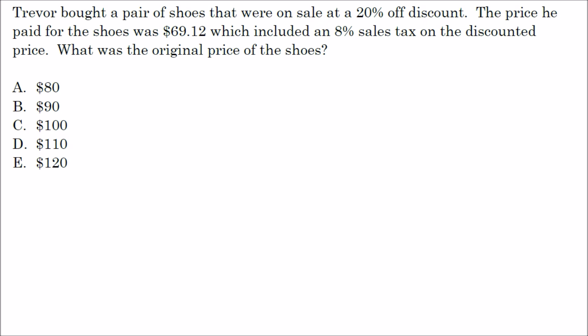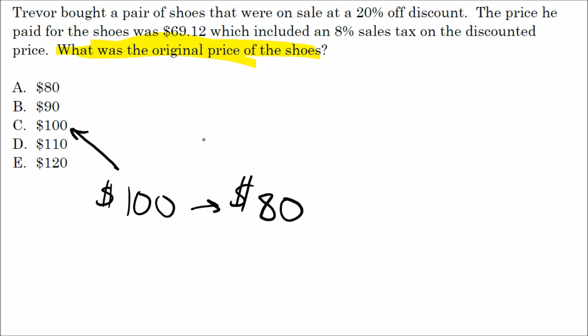A lot of people struggle with percent questions, so let's try to make this as easy as possible. It says: Trevor bought a pair of shoes on sale at 20% off. The price he paid was $69.12, which included an 8% sales tax on the discounted price. What was the original price of the shoes? The answer choices represent possible original prices. I'll start with choice C — let's say the original price was $100. Twenty percent of $100 is $20 off, giving $80, but $69.12 is already below $80, so $100 is too high.